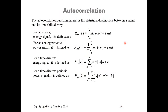The autocorrelation function is a statistical measure of the dependency between a signal and its time-shifted copy. For an analog energy signal, it is defined as the integral of x(t) multiplied with x(t + τ), where τ is the time-shift between those two copies. We integrate over time from minus infinity to infinity in order to analyze the correlation between those two copies.